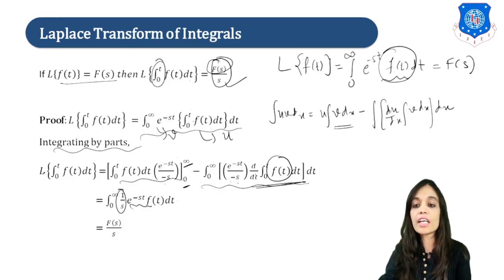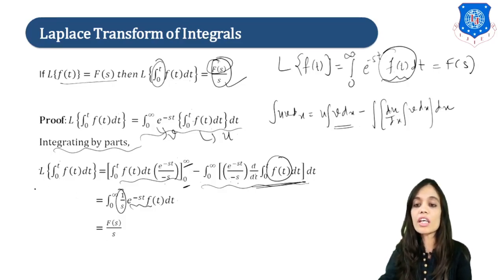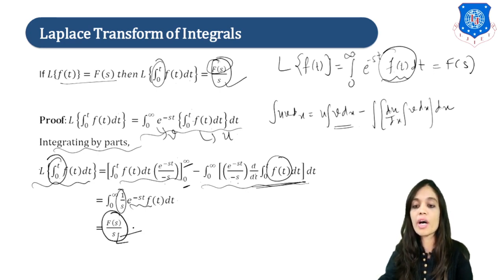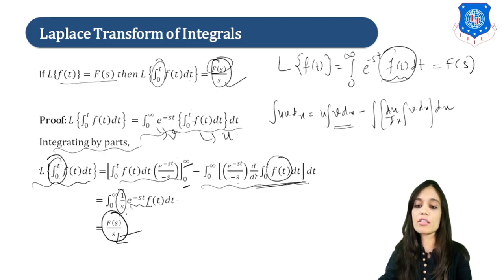We know the integral from 0 to infinity of e raised to minus st times f(t) dt is equal to F(s). So substituting, finally, the Laplace of the integral from 0 to t of f(t) dt equals F(s) upon s. Whenever you see an integration, just divide F(s) by s to get your required answer.